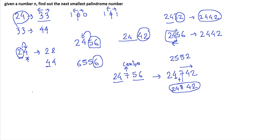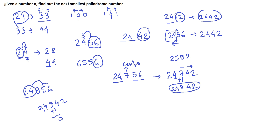Consider the input 24956. Reversing the left and replacing the right gives 24942, which is smaller. If we try to increment the center digit 9 by 1 we get 0, so we mark the center as 0 and carry 1 to the left part: 24 becomes 25. The left is now 25, its reverse is 52, and the center is 0, giving the next palindrome 25052.